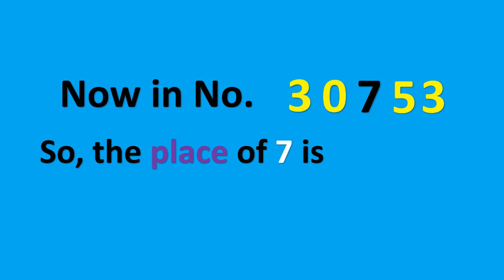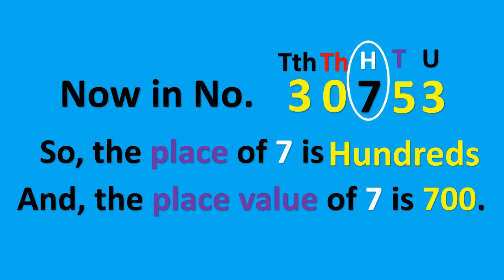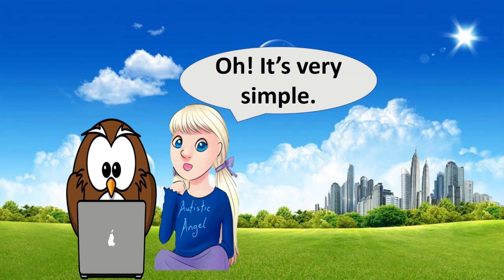Now moving on to place and place value. In the number 30753, three is at the units place, five is at the tens place, and seven is at the hundreds place. So the place value of seven is seven hundred — that is, seven (the face value) multiplied by one hundred (the place) equals seven hundred.